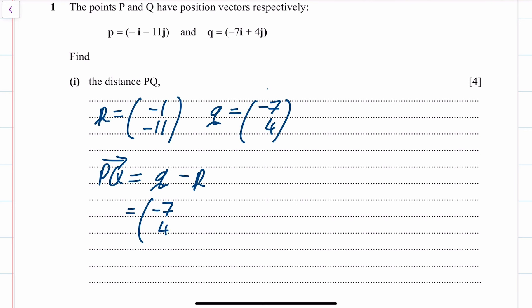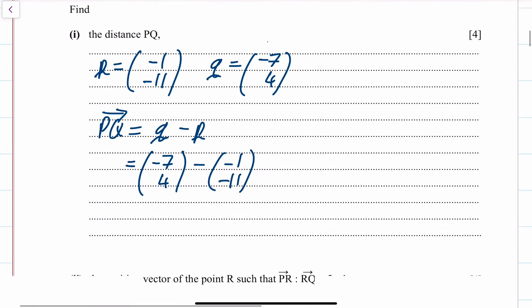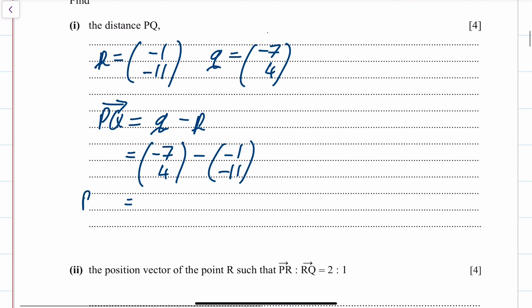So that is minus 7, 4, then minus, minus 1, minus 11.